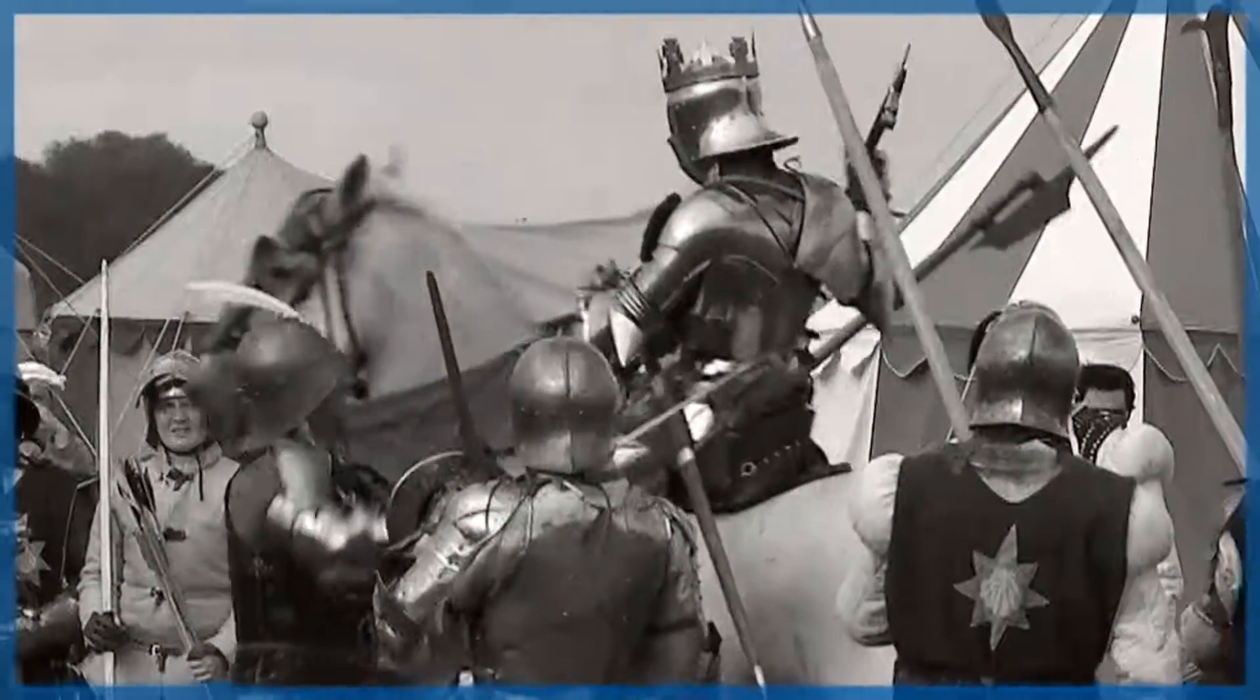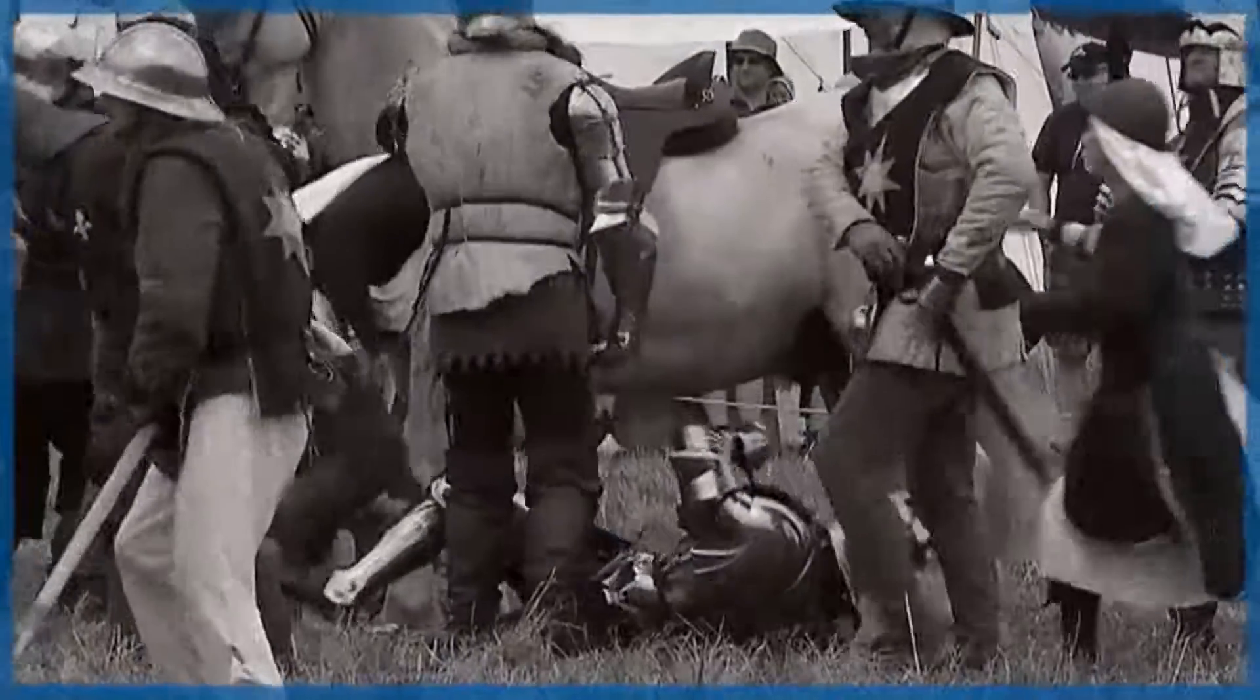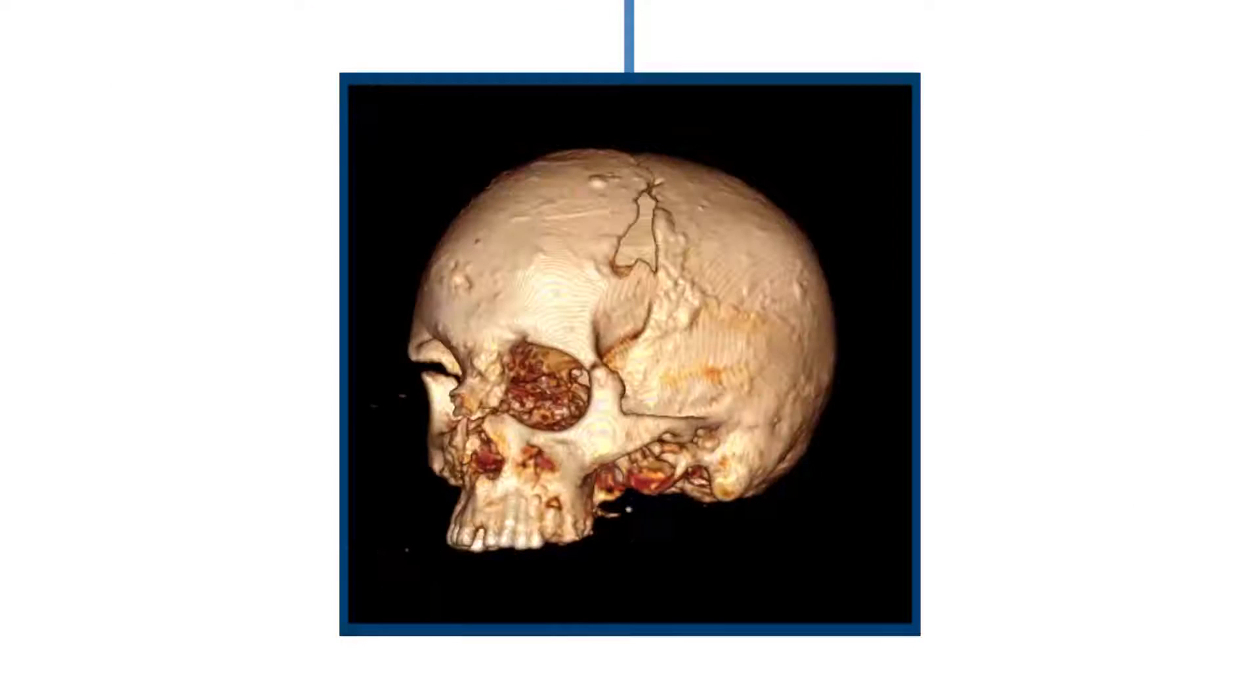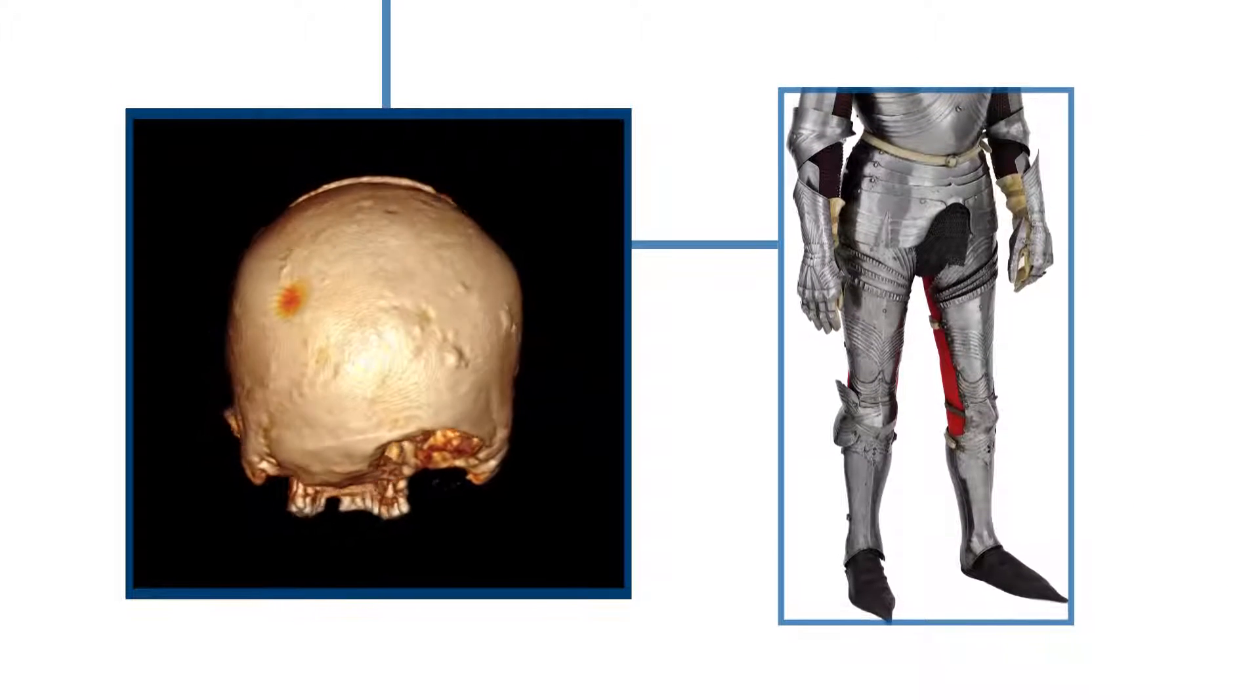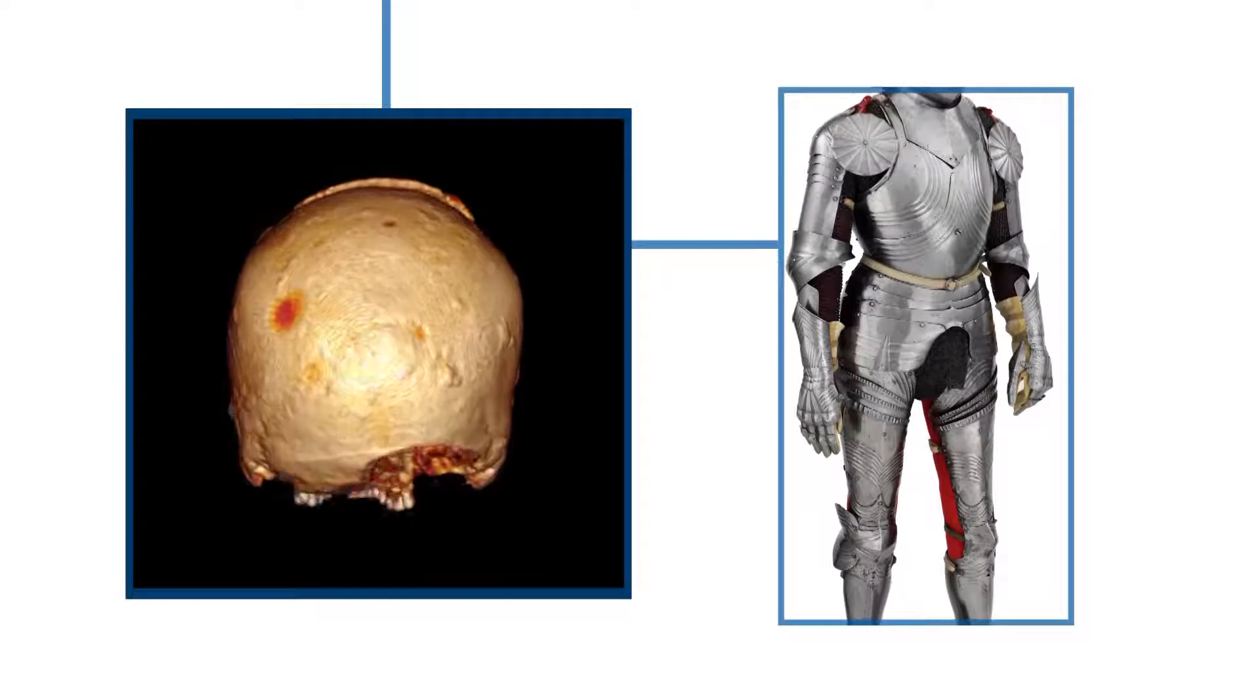Accounts of the battle suggest that Richard III abandoned his horse after it got stuck in a mire and went down fighting surrounded by his enemies. His head injuries are entirely consistent with that. But neither they, nor any of the multiple injuries are consistent with an individual wearing armour of the late 15th century type.